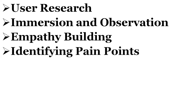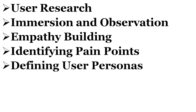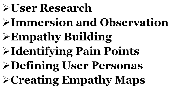During this stage, designers identify the pain points and problems faced by users. These pain points are opportunities for design interventions that can make a positive impact on users' lives. User personas are fictional representations of different user groups, capturing their characteristics, needs and goals. Empathy maps are visual representations that consolidate information and insights about users — highlighting what users think, feel, say, do, and what their pain points and gains are.